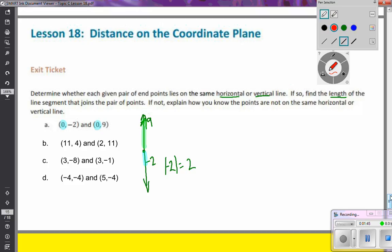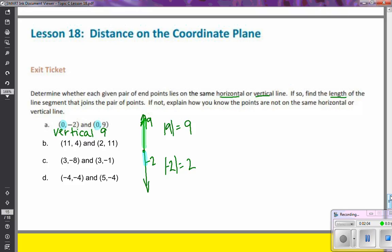So when we think about our absolute value, my absolute value of 9 is 9. So I've got 9 above 0, 2 below 0. And therefore, this is on a vertical line and 11 units apart. 9 plus 2 will give me 11 units apart.